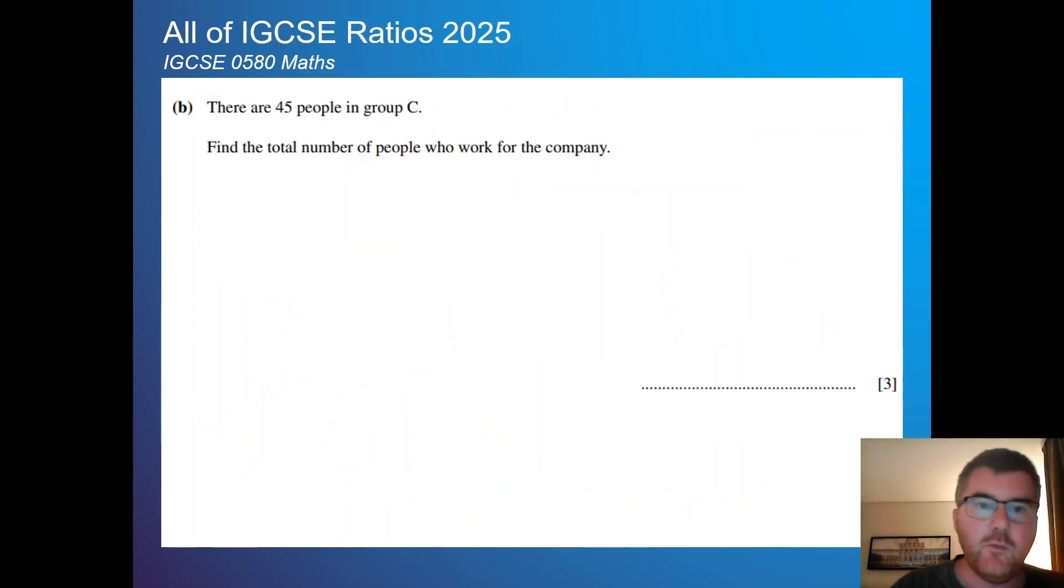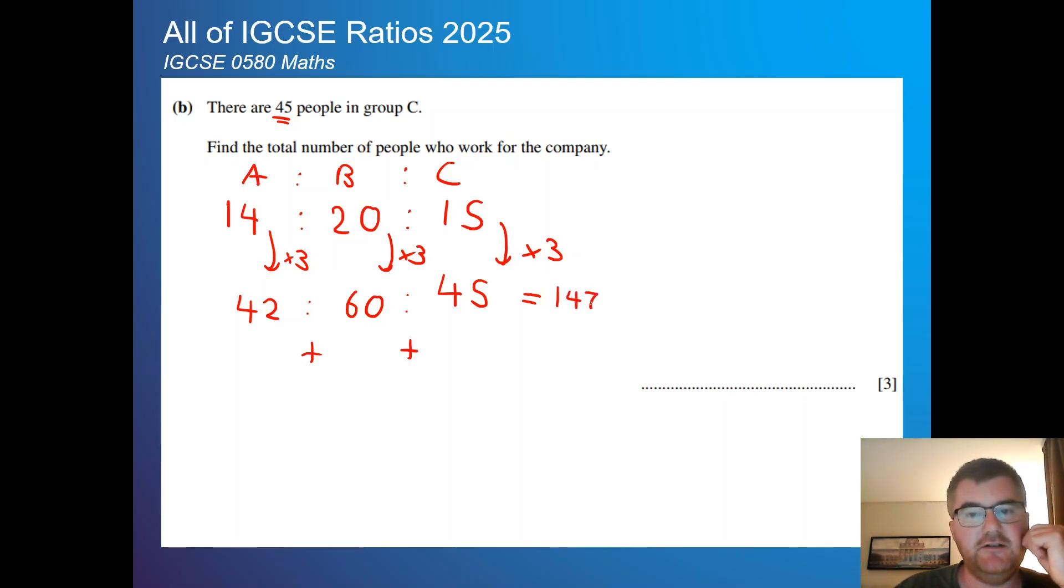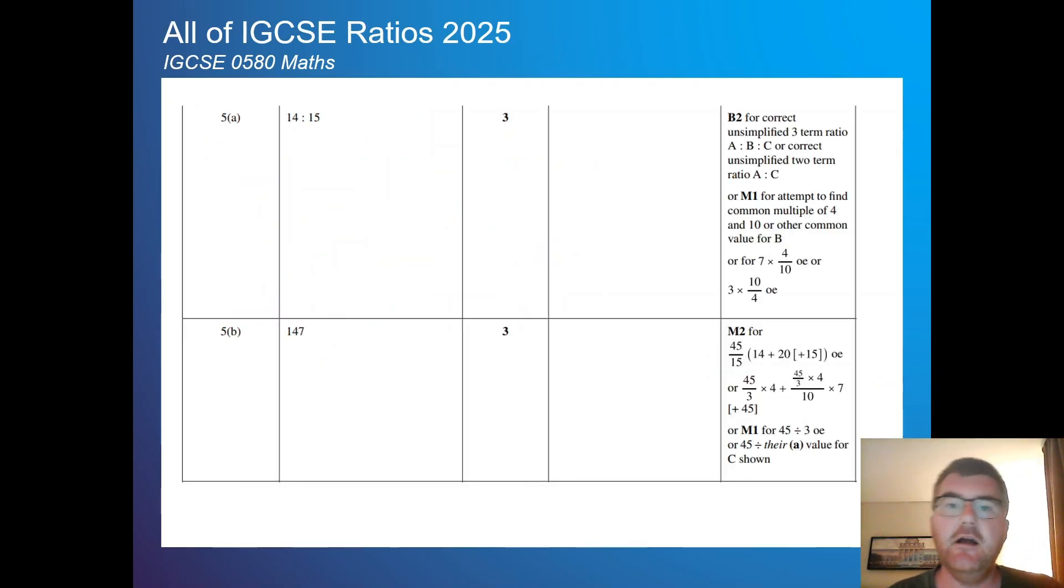Structure very important. Now once we have that ratio of 14 to 20 to 15, so A to B to C, we can use that to answer questions like this. So there are 45 people in group C. Find the total number of people for the company. We have 45 under the C. What do we multiply 15 by to get 45? Well that's 3. So we do the same with each of these. 20 times 3 is 60, 14 times 3 is 42. And then we just add together these numbers here, and that gives us 147. Hopefully this makes much more sense to you.